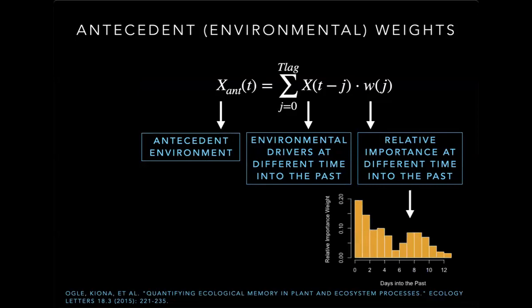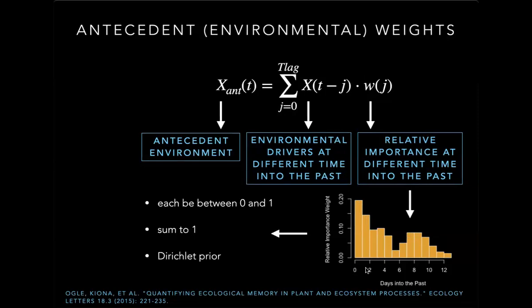To give you an example of a hypothetical antecedent weight: on the x-axis you have days into the past, zero being the present, and on the y-axis you have the relative importance weight. In this hypothetical example, you have a bimodal pattern — the present being relatively important, and the importance decreasing over time until there is a secondary importance peak around a week ago. These w's are parameters estimated from data, each between zero and one and summing to one, and in the Bayesian context you give them a Dirichlet prior.